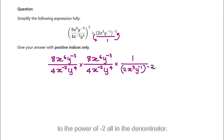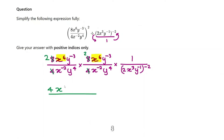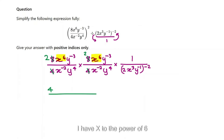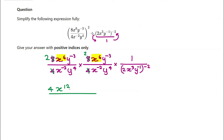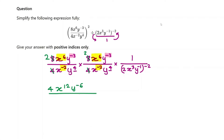Let's simplify this a bit. I can see 8 divided by 4 is 2, and 2 times 2 is 4. I have x to the power of 6 multiplied by x to the power of 6, so that's x to the power of 12. Then y to the power of 6 multiplied by y to the power of 6 multiplied by y to the power of negative 3 — the powers are added up, so I get y to the power of negative 6.